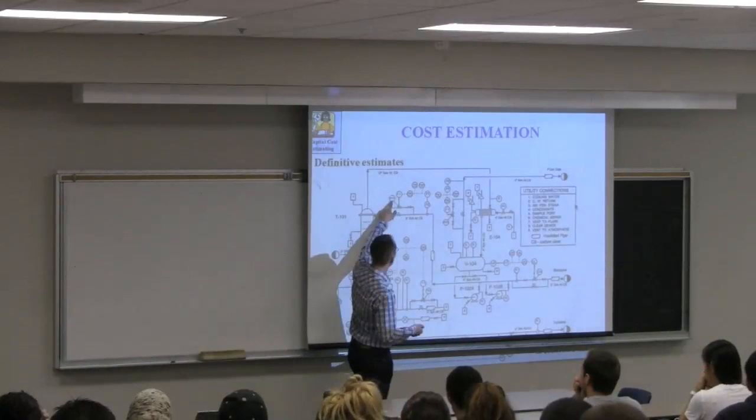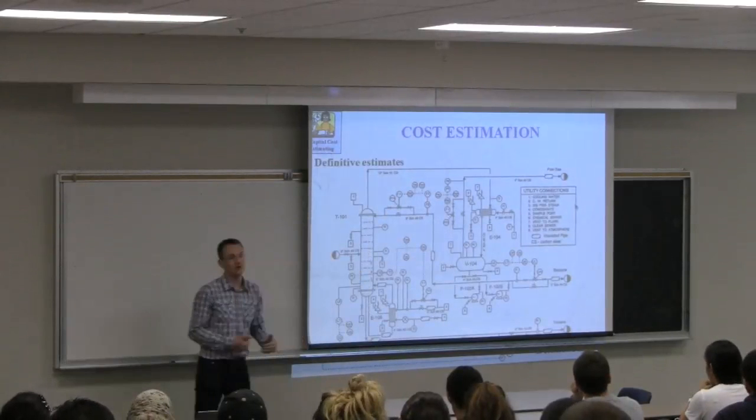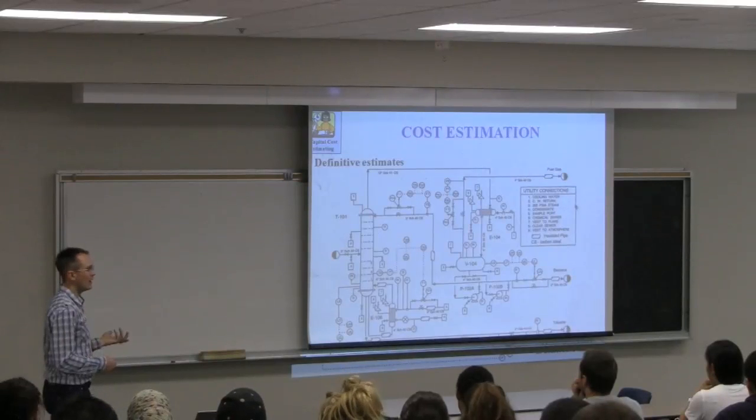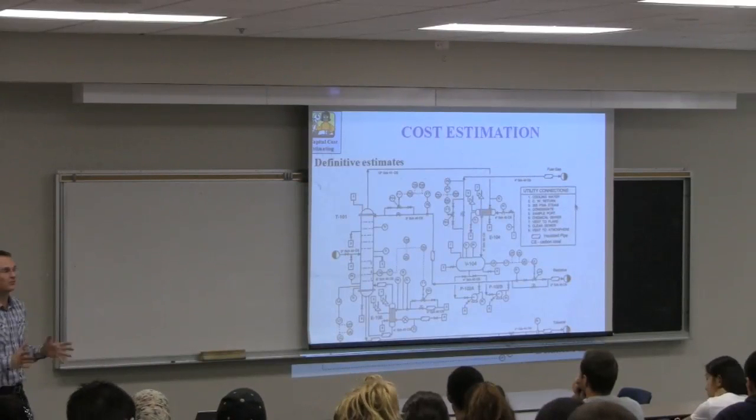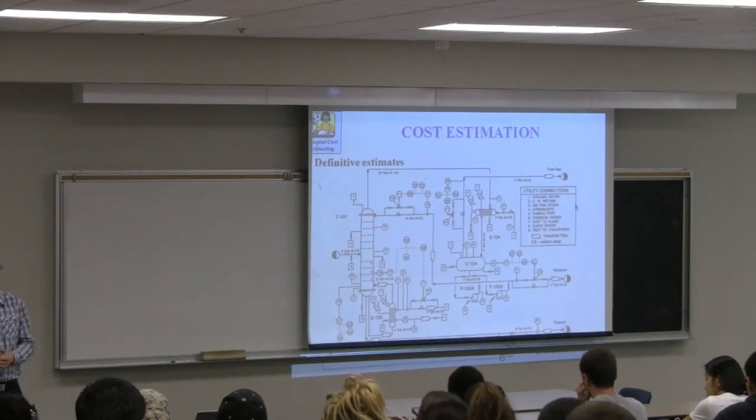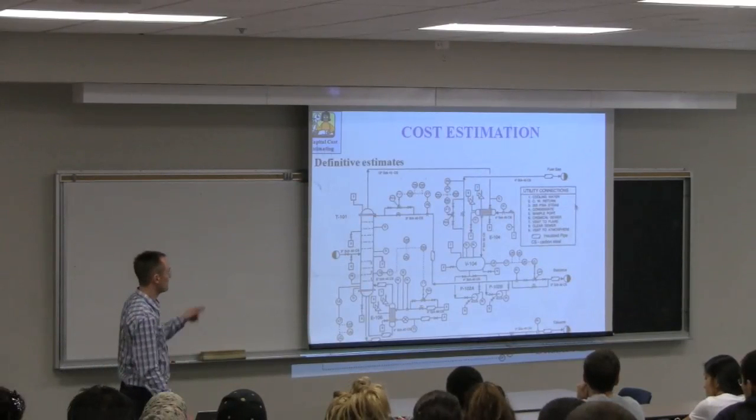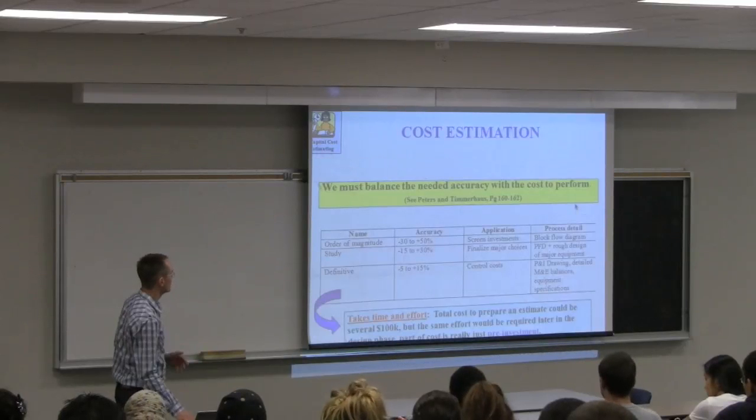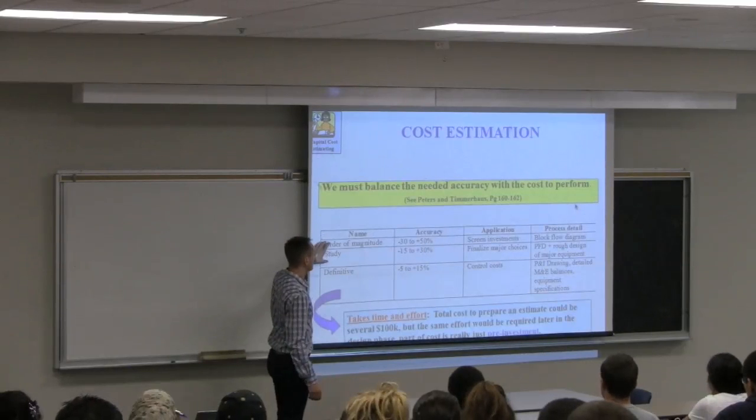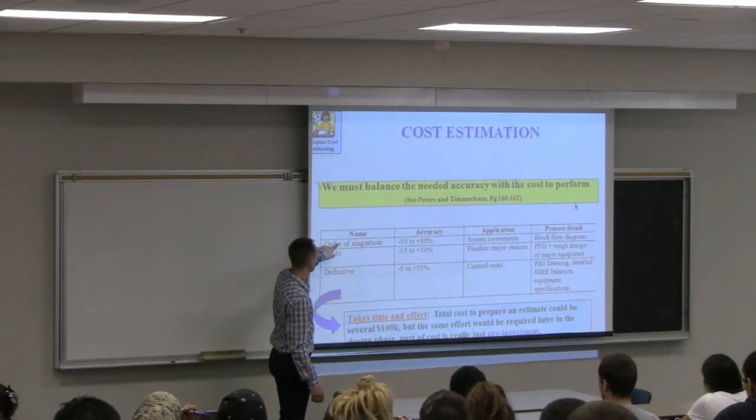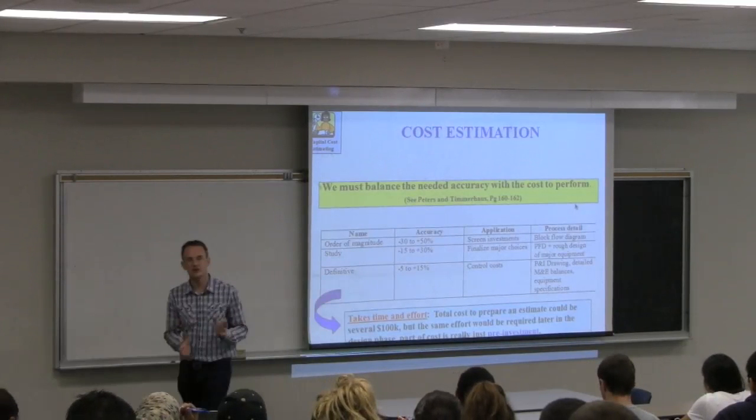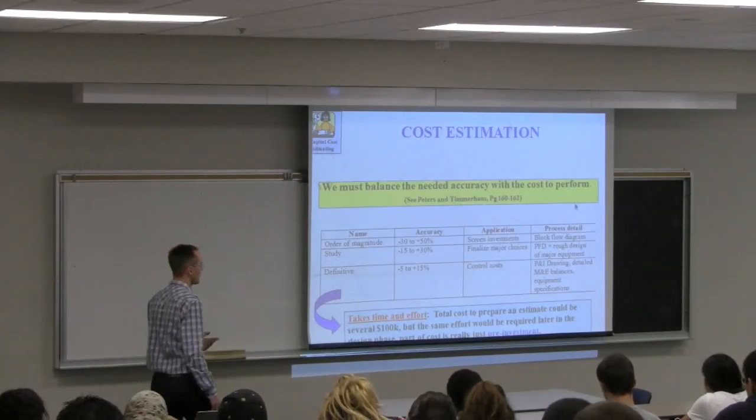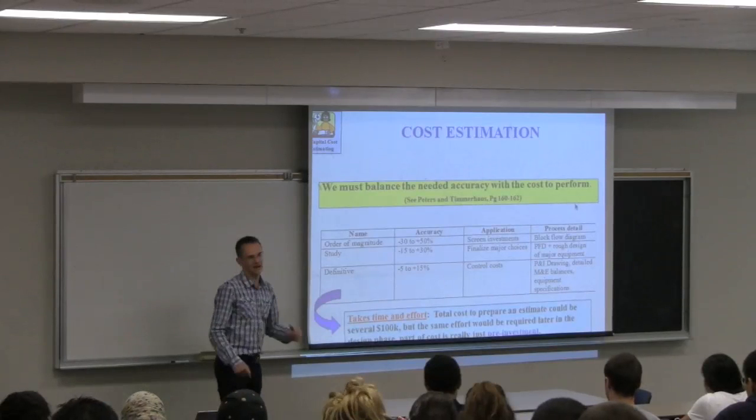We will see this when we start to look at startup and shutdown and troubleshooting of the process. All this detail here on the different control loops are going to be critical when we're looking at safety and instrumentation to handle safety issues around the process, and also how does this instrumentation react when things go wrong. But for capital cost estimation, we're going to look at somewhere between an order of magnitude and a study estimate. We want estimates that are pretty much within 30% of our final cost. The definitive estimate, required for construction, we won't get to that level of accuracy in this course.